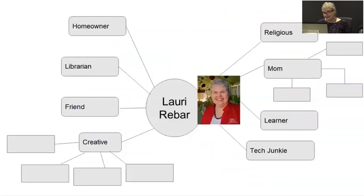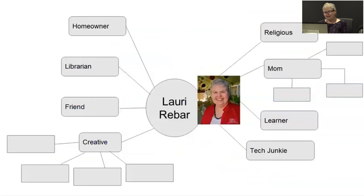For the hands-on activity, participants are asked to map out themselves — something everyone knows well. It's a metacognitive exercise — thinking about yourself and your approach to things. Participants are asked to do this on paper, while a demonstration is done on the whiteboard. Please share paper with guests in the room.